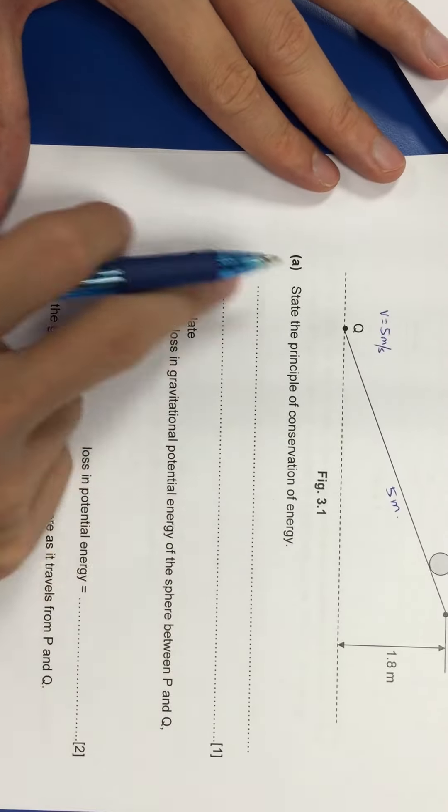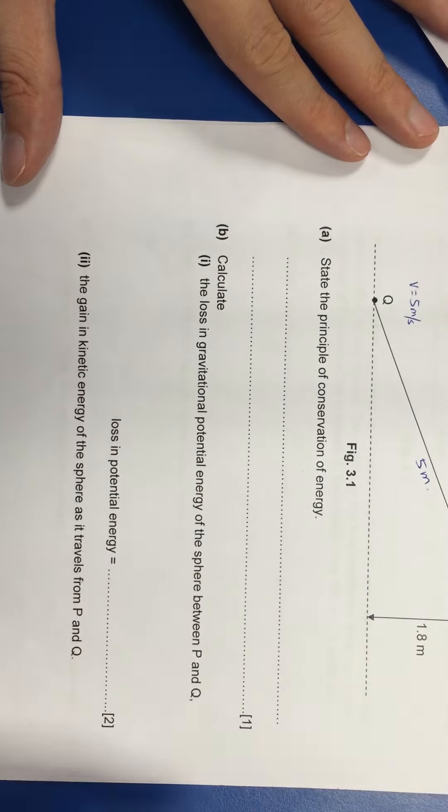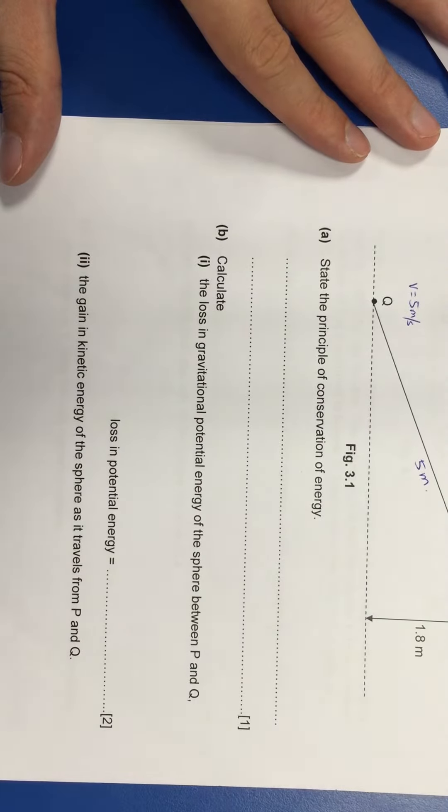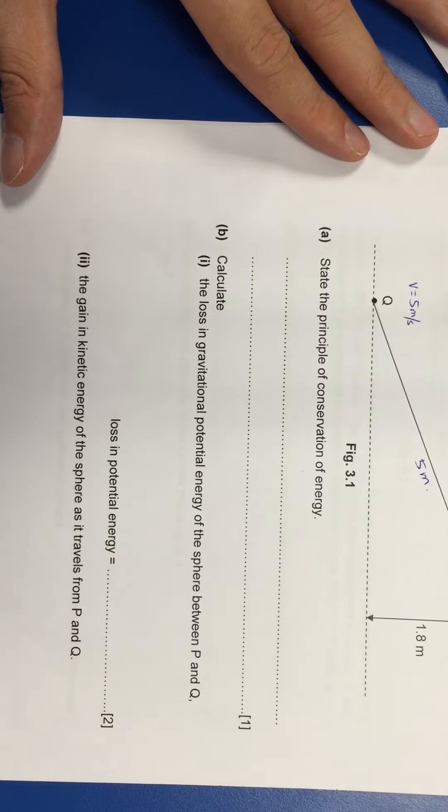Part A you just refer to your textbook. There must be three components. Cannot be created nor destroyed. Can only be transferred from one body to another body. Can only be converted from one form to another form.